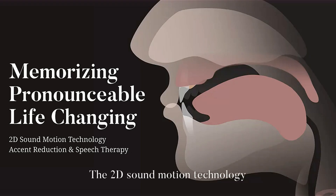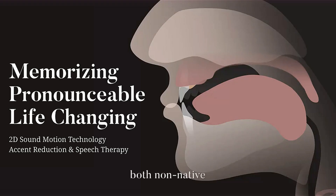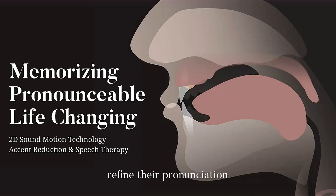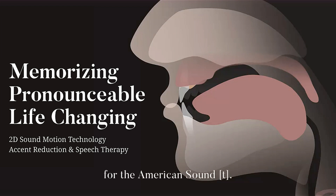The 2D Sound Motion technology is a two-dimensional visual and auditory simulator designed to help both non-native and native speakers refine their pronunciation of American sounds. You will be introduced to the 2D Sound Simulator for the American sound t.